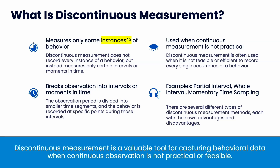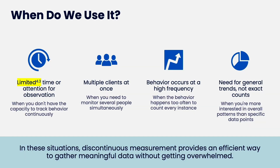We have three different types: partial, whole, and momentary time sampling. We use it when there's limited time or attention for observation, when there are multiple clients at once, or when behaviors occur at a high frequency and we need a general trend — the exact count is not as important.